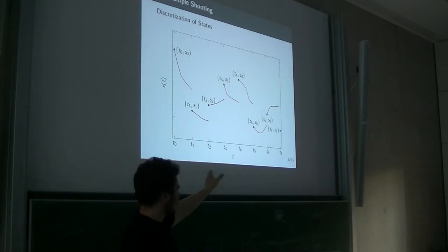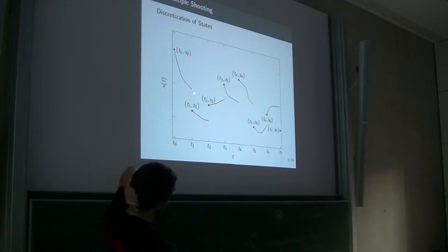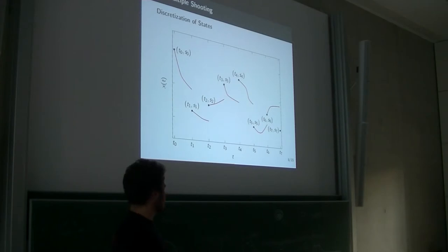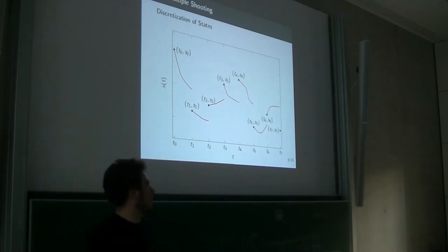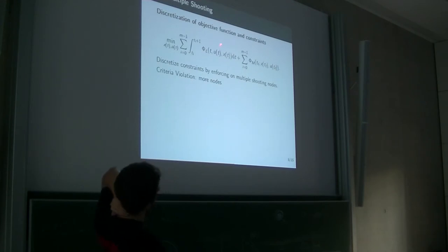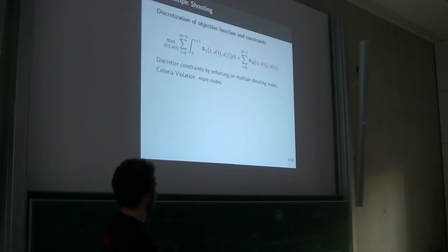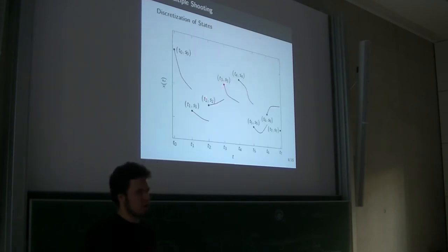Instead, we discretize our time frame into multiple intervals and solve a boundary value problem from node to node. Over these shorter time frames we have much better control over what is actually happening. The only constraint is that the endpoint of one interval must be the starting point of the next. We then discretize our objective function — one objective function value per interval — and discretize our constraints by enforcing them only at the nodes. If constraints are violated in between, we simply add more nodes.